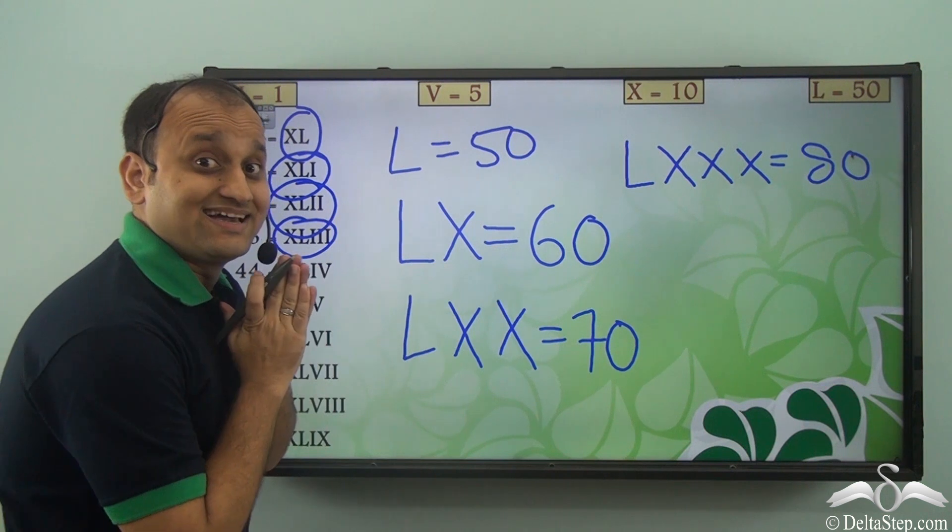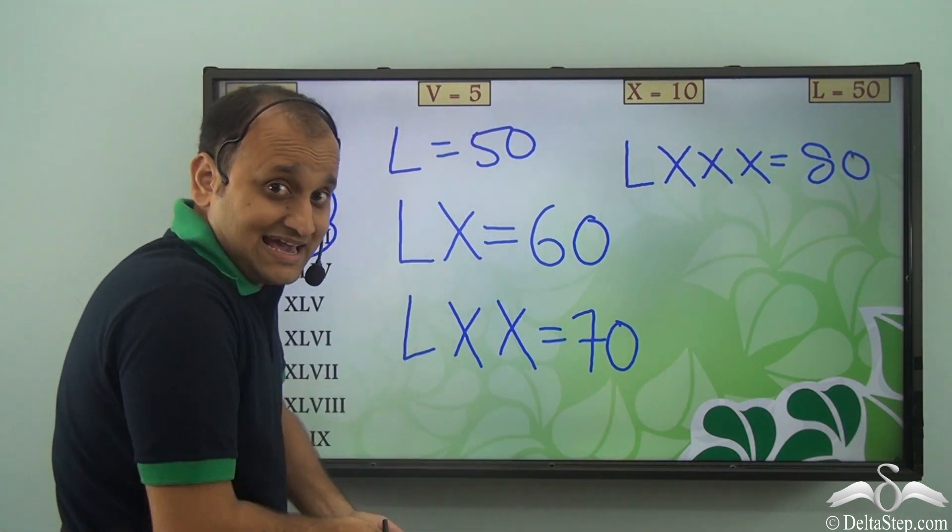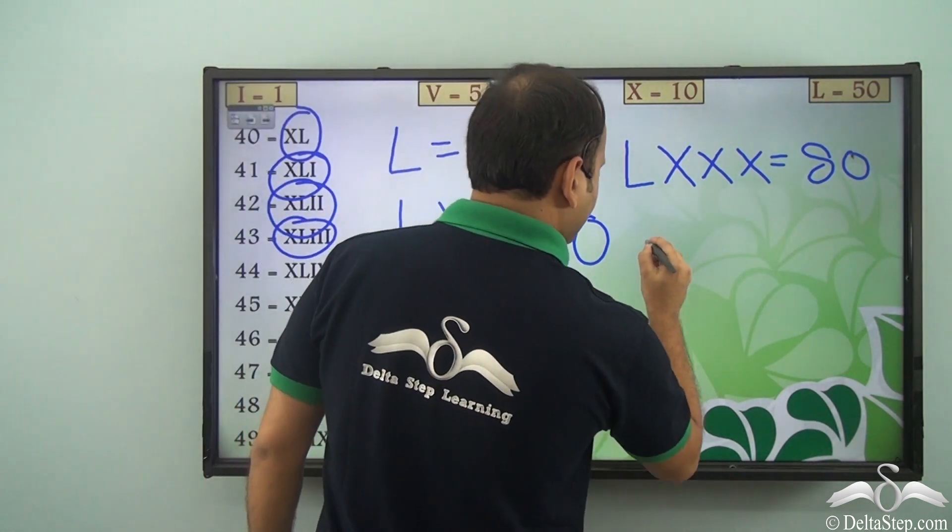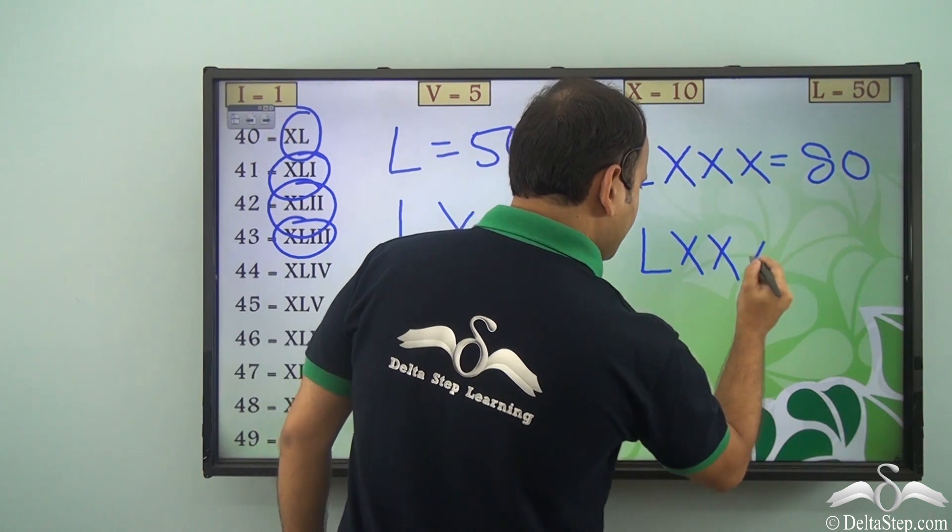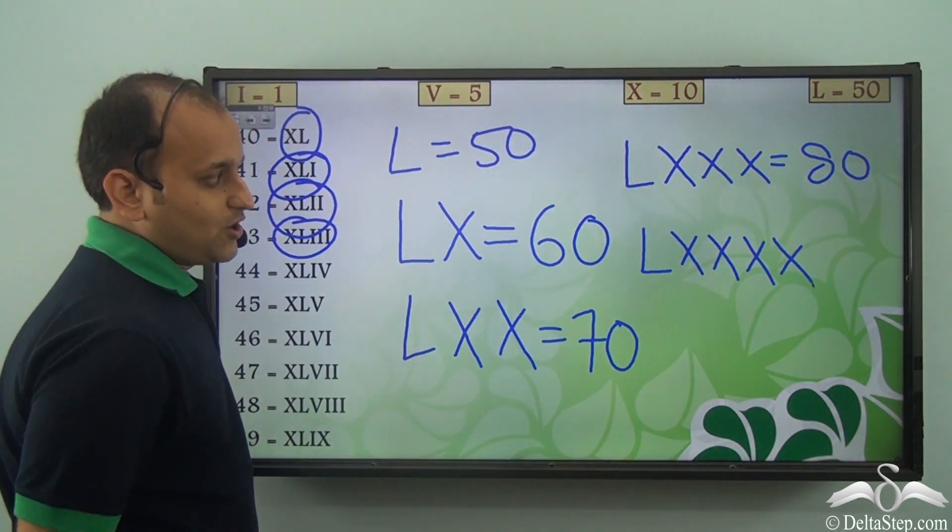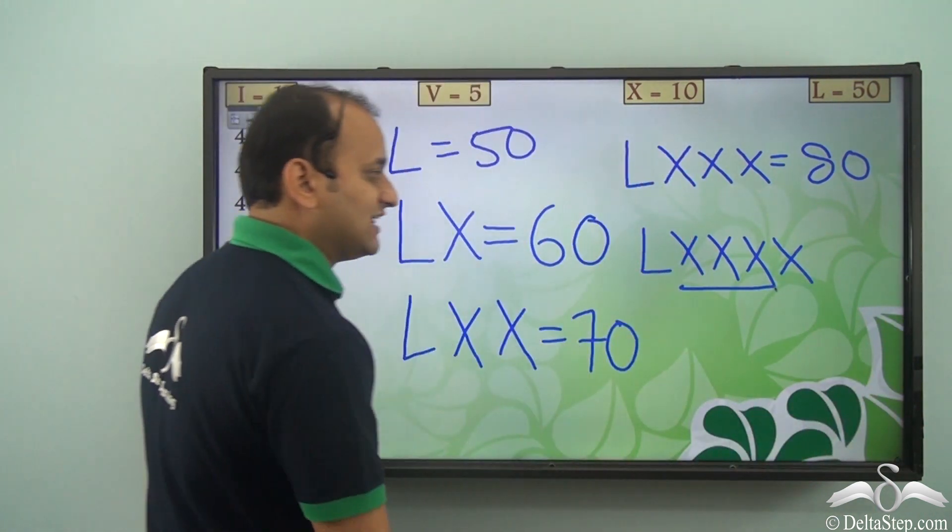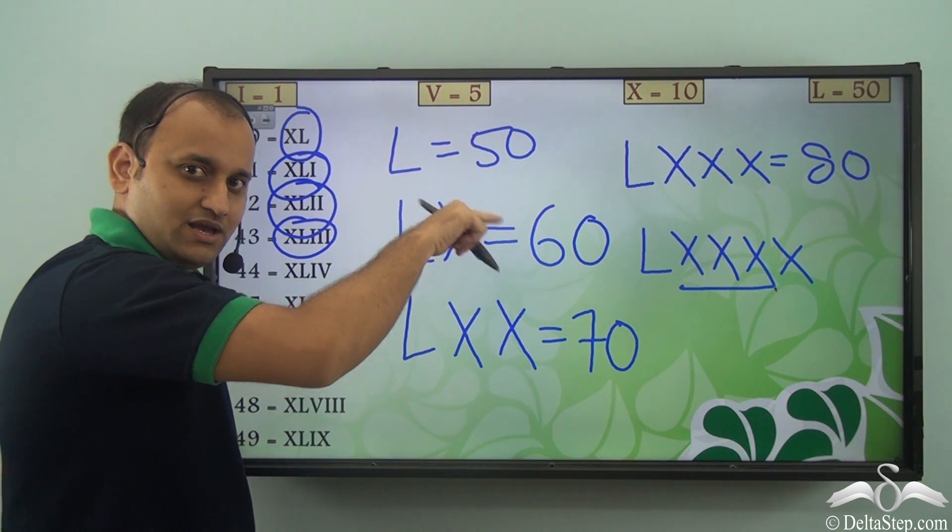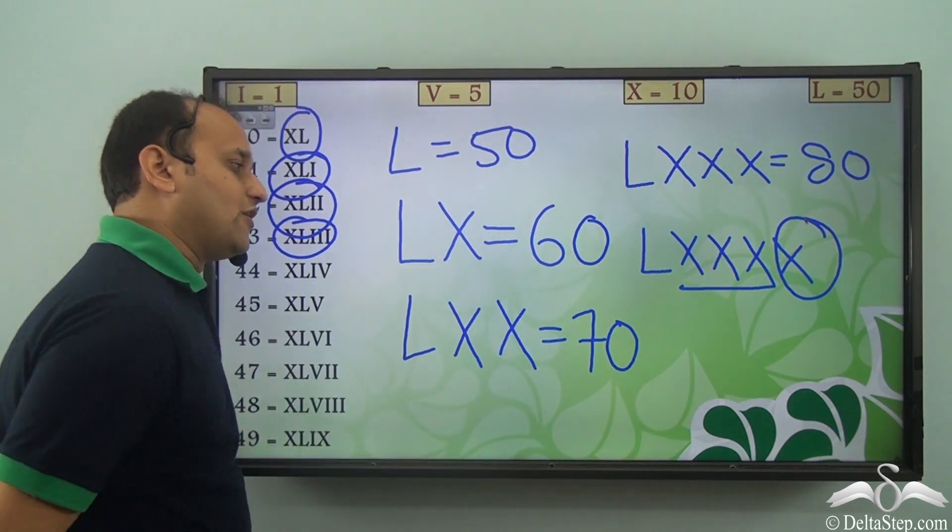Can we use only these symbols to represent 90? Let's try. So 50, 60, 70, 80, 90. But there is a problem. We cannot have more than 3 of the same symbol consecutively. So we cannot write 90 in this particular form.